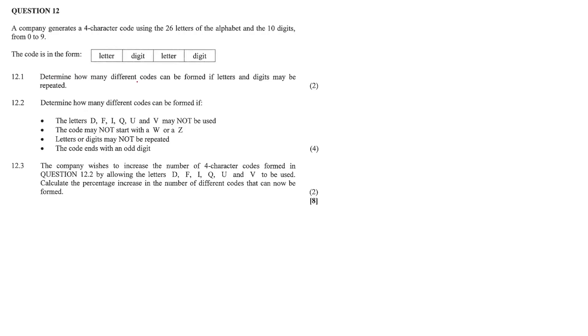Question 12.1: Determine how many different codes can be formed if letters and digits may be repeated. If letters and digits may be repeated, we can have 26 letters for the first letter, 10 digits for the first digit, 26 letters for the second letter, and 10 digits for the second digit. So that will give us a value of 67,600. That's how many different codes we can make if letters can be repeated.